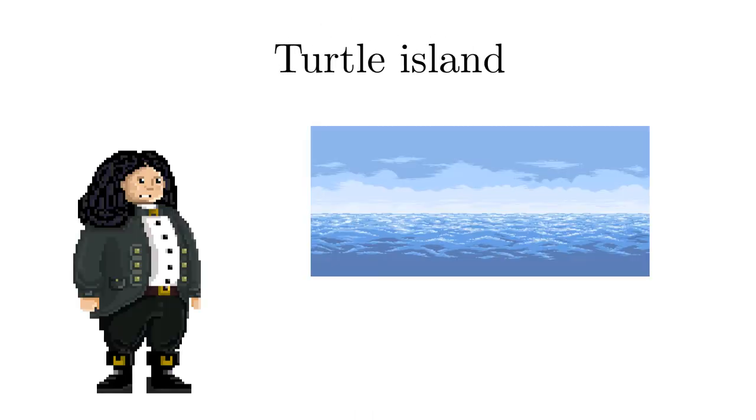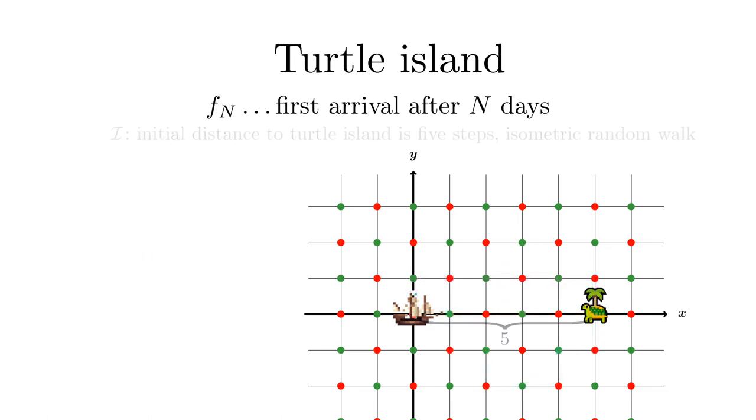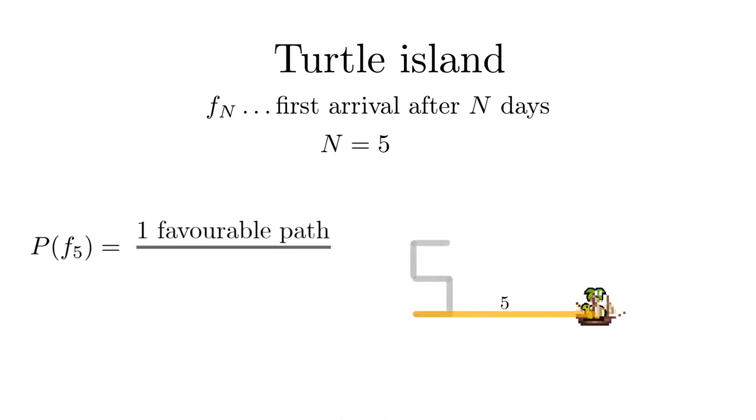Bernoulli wanted to know the chance to reach Turtle Island that is 5 steps away within 5, 6, up to 10 days. Similarly to the ideas of the first return we can at least say the following immediately. It takes an odd number of days as the distance is odd. Just think of a checkerboard with the colors corresponding to the even or odd days. To reach the island in 5 days if it is 5 steps away means that the ship has to go straight. So there is only one favorable path out of 4 to the power 5. Thus the probability is 4 to the minus 5 which is 0.001 which is surprisingly small.